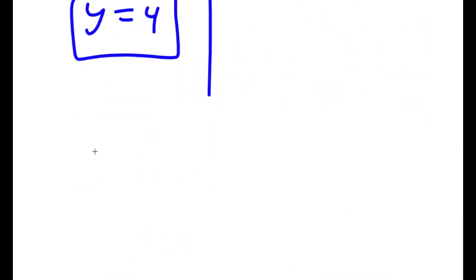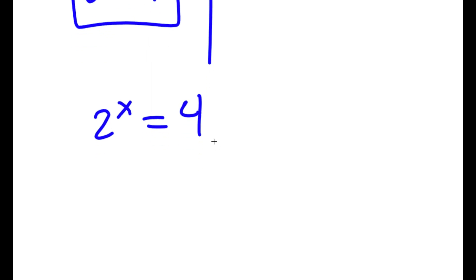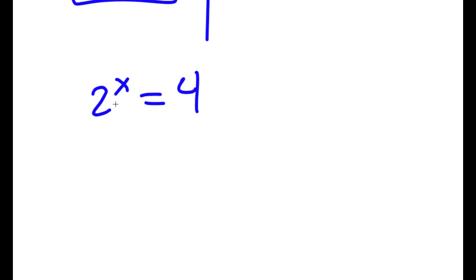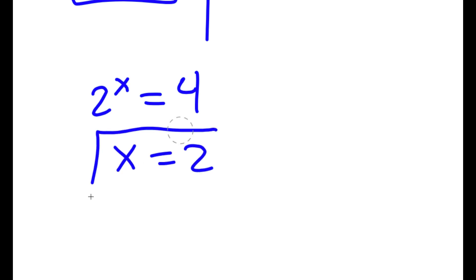Remember we let 2 to the power of x equal y, so if y equals 4 then 2 to the power of x is equal to 4. Two to the power of what number equals 4? Two — so x is equal to 2, and this is the solution to this problem.